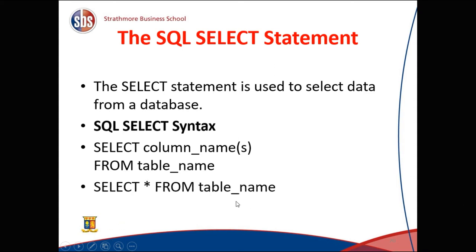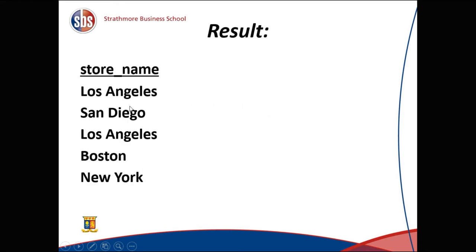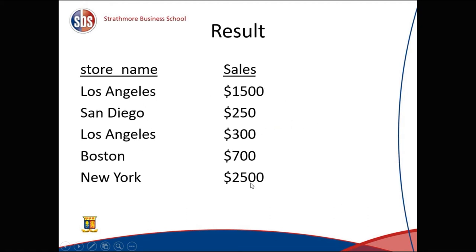When you say SELECT * FROM table_name, that means you want to display all the columns and all the rows. For example, SELECT store_name FROM store_information will list the five different store names. SELECT store_name, sales FROM store_information will display all store names and their corresponding sales.